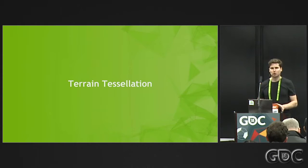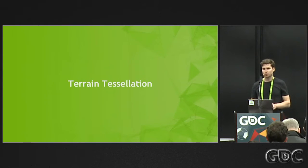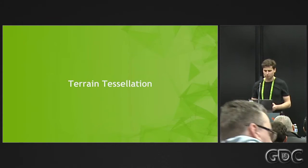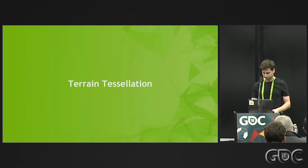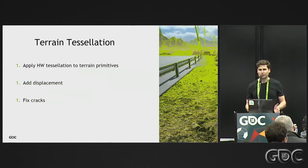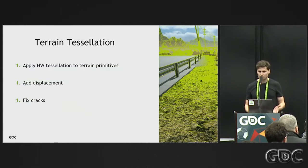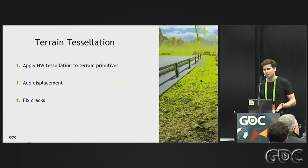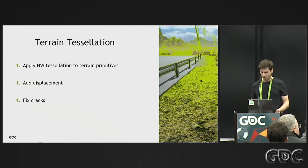Let's start with terrain tessellation. In this session, we're going to focus mostly on detailed terrain tessellation, which is about adding more details for close-up views in order to make it look more natural. If you think of adding tessellation and displacement to your terrain, there are basically three steps to achieve this goal. We start with hardware tessellation, applying it to your existing primitives, then we add some displacement, and the last step is optimizations and fixing cracks.